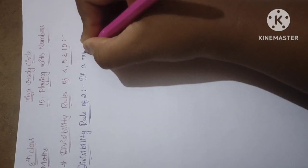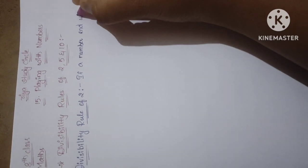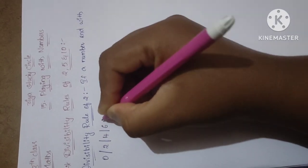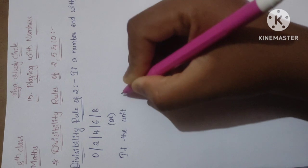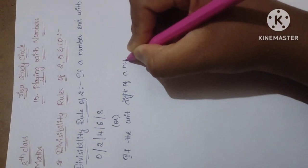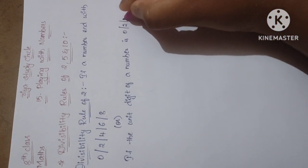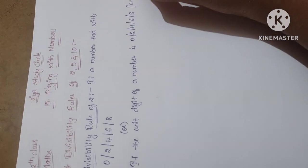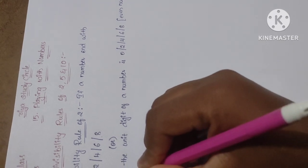First, let's start with the divisibility rule of 2. That is, if a number ends with — 'end with' means nothing but the unit digit — the digit 0, 2, 4, 6, or 8, then that number is divisible by 2. You can also say: if the unit digit is even, that number is divisible by 2. Divisible by 2 means if you divide a number by 2, you get remainder 0 — it is completely divisible.